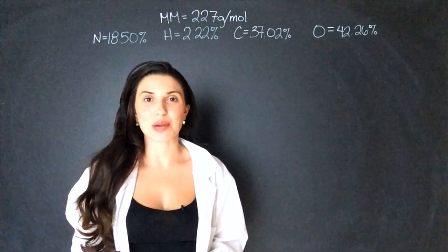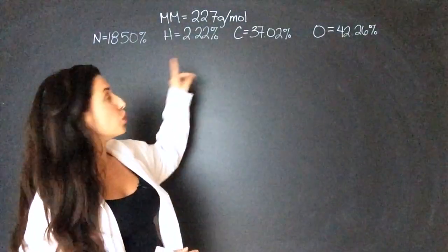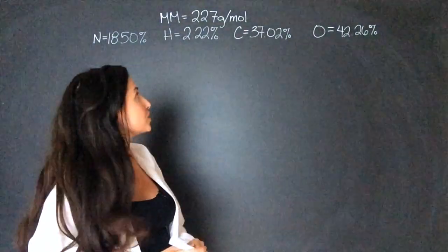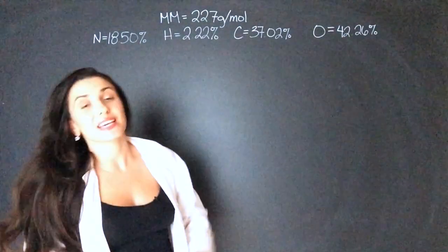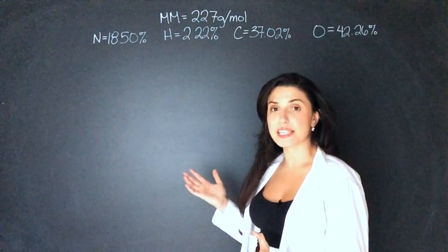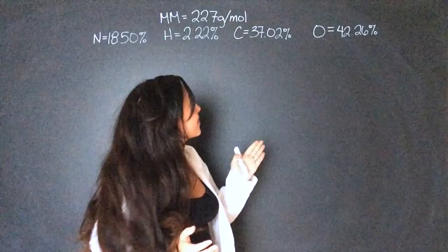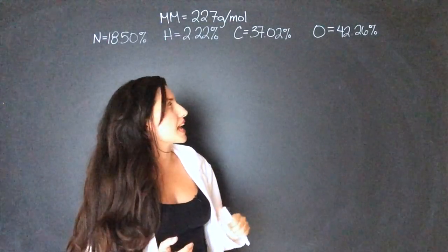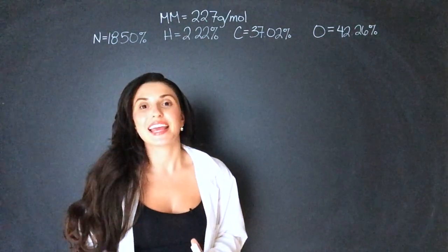All right, for my example problem I've laid out what is given to us. We have the molar mass of the molecule is 227 grams per mole and then we have the mass percent of each of the atoms in the molecule. Of the mass, 18.5% is nitrogen, 2.22% is hydrogen, 37.02% is carbon and 42.26% is oxygen.